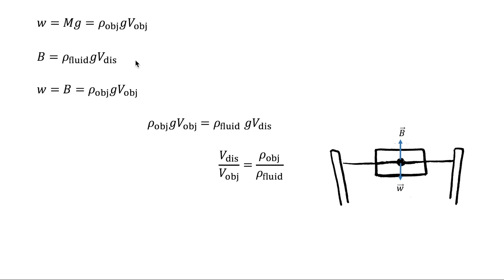Solving the equilibrium equation gives the fraction of the object's volume below the liquid surface, which equals the ratio of the object's density to the liquid's density.